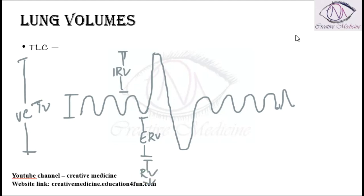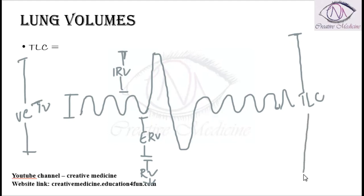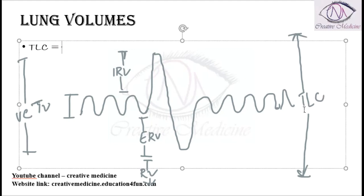The air remaining in the lungs after expiration is called residual volume. Total lung capacity is the total amount of air that can be present in the lungs: inspiratory reserve volume plus tidal volume plus expiratory reserve volume plus residual volume. It is the volume present after maximum inspiration.